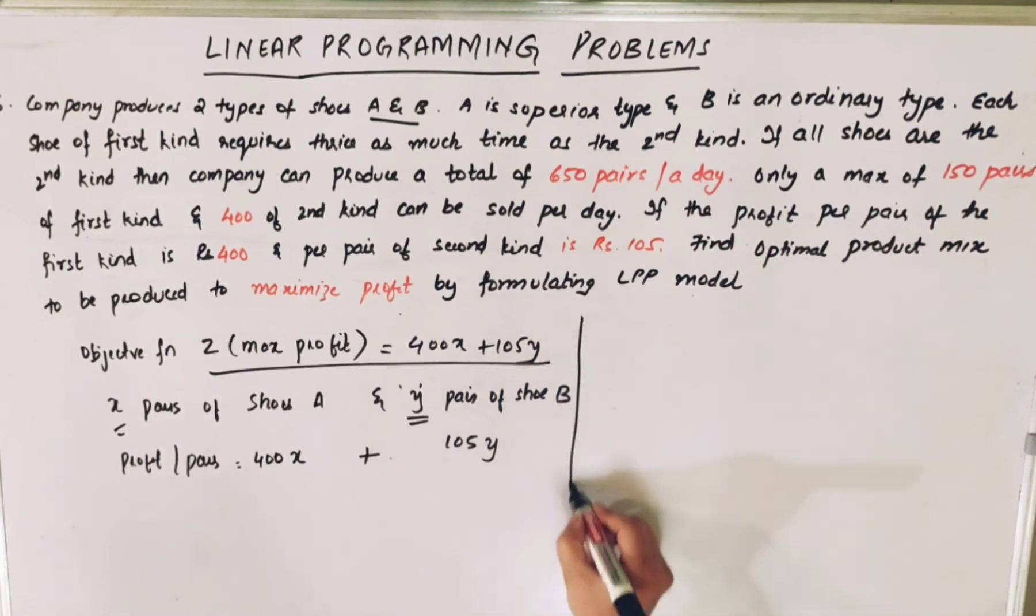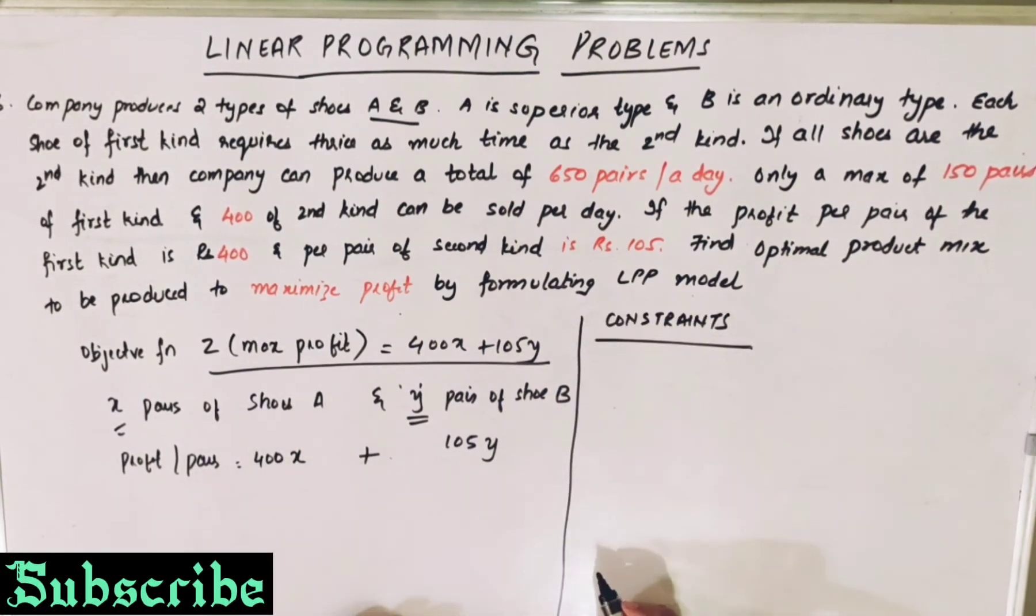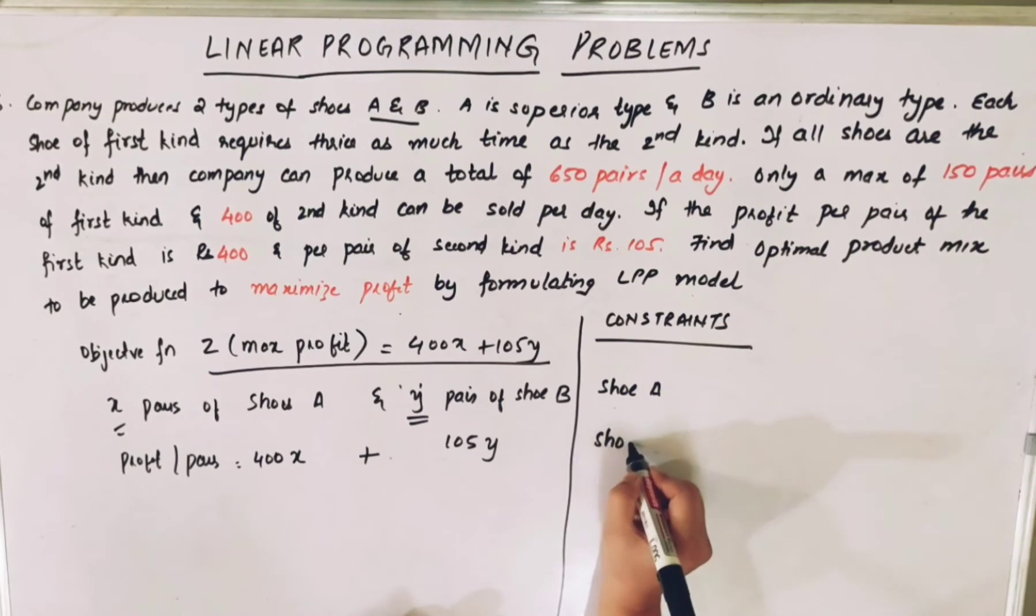Now let's arrive at constraints. What are the main two types of shoes we have? Shoes A and shoe B. What are the other variables we have? We have time. Time is the only variable, the time taken to manufacture the shoes.